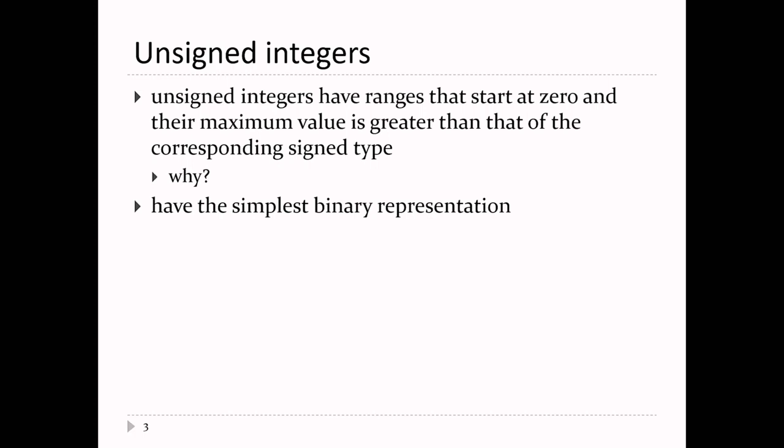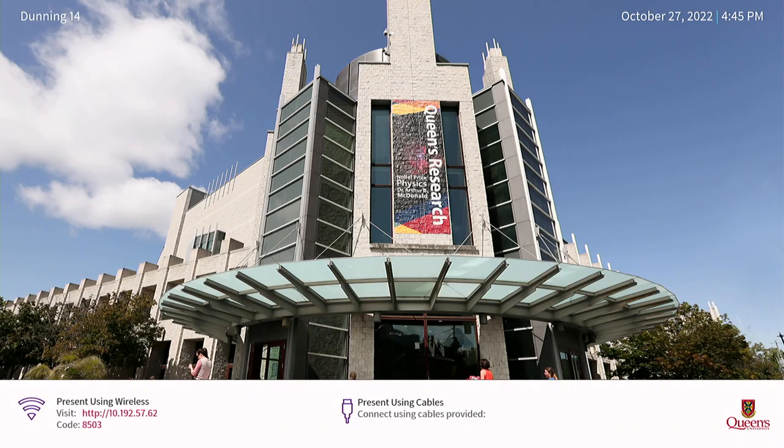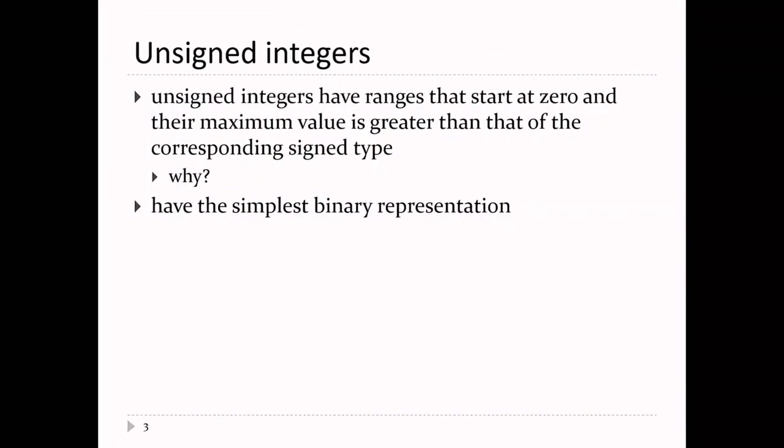C has these things called unsigned integers. The unsigned integers start at zero — there are no negative values in the unsigned integers. An unsigned int takes up the same amount of memory as a plain old int. Unsigned int and signed ints occupy the same amount of memory.